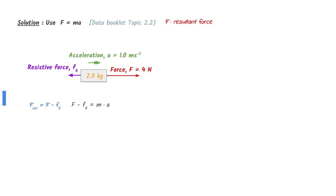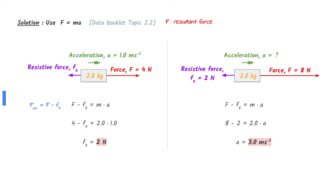Use F equals ma to find the magnitude of the resistive force. The resultant force is 4 newtons minus the resistive force. Put in the values given in the question to find that the resistive force equals 2 newtons. Next, increase the force to 8 newtons. Subtract the resistive force of 2 newtons to find the resultant force. Rearrange and calculate to find the acceleration.